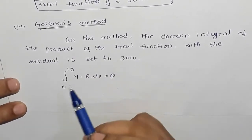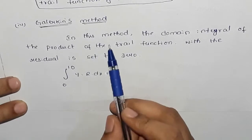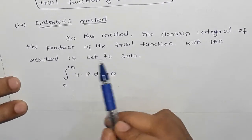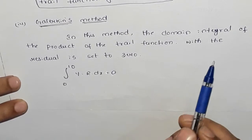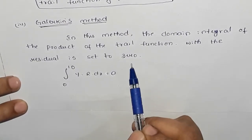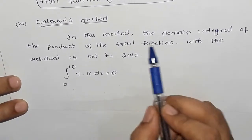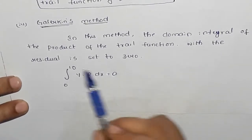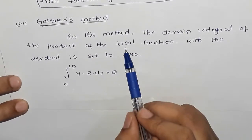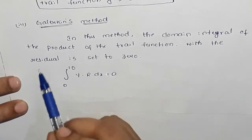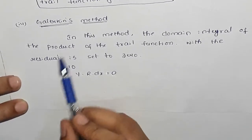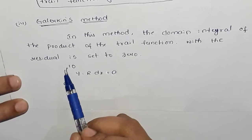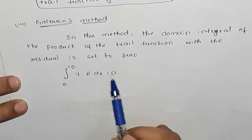In this method, the domain integral of the product of the trial function with the residual is set to 0. This method is called the domain integral of the product of the trial function and weighted residual function. We are going to multiply the integration and set it equal to 0.